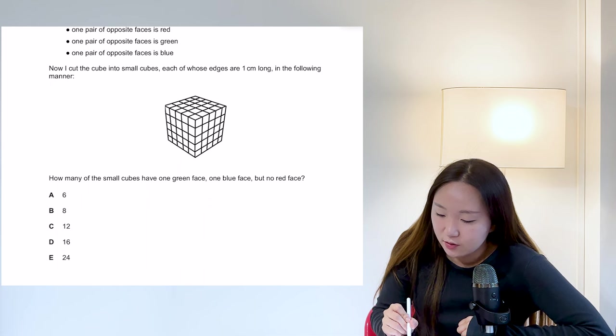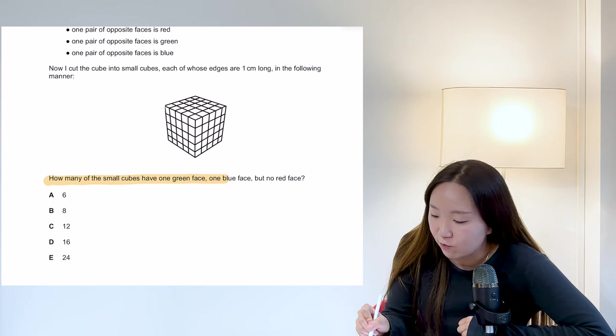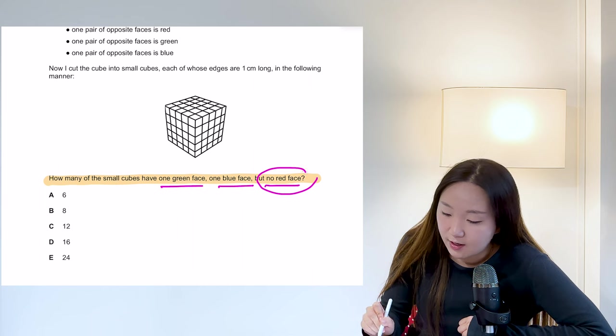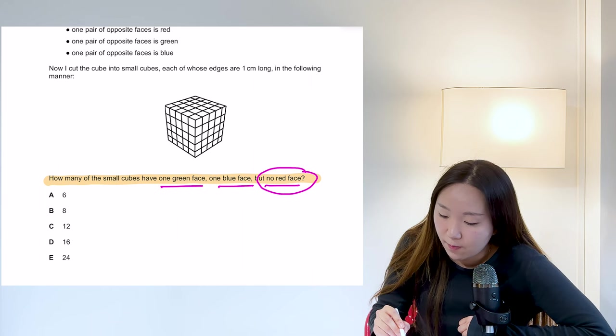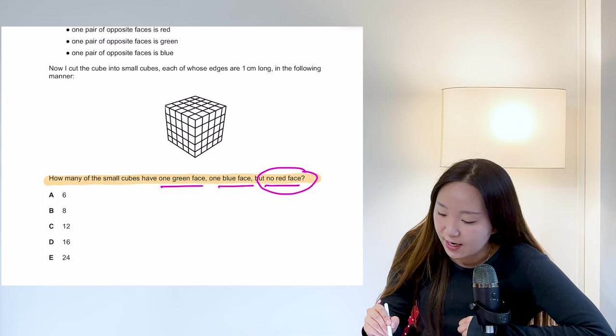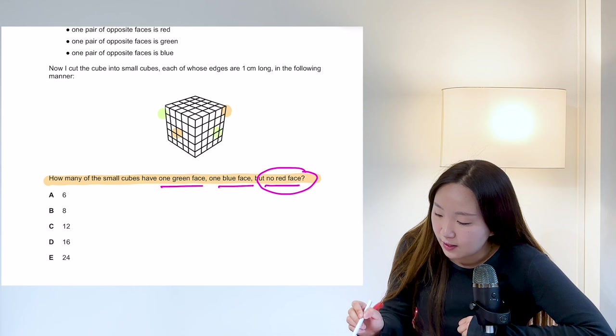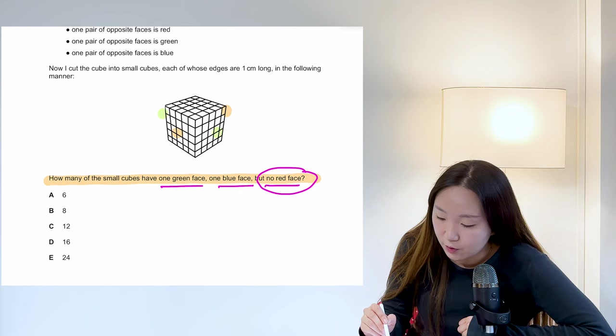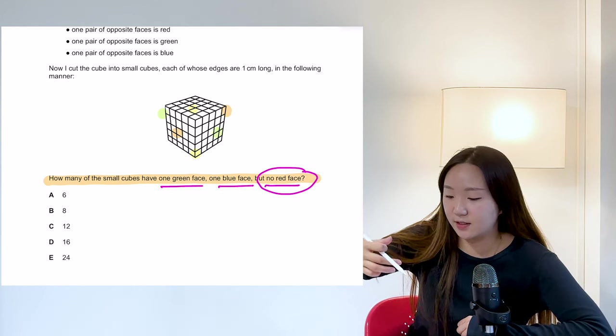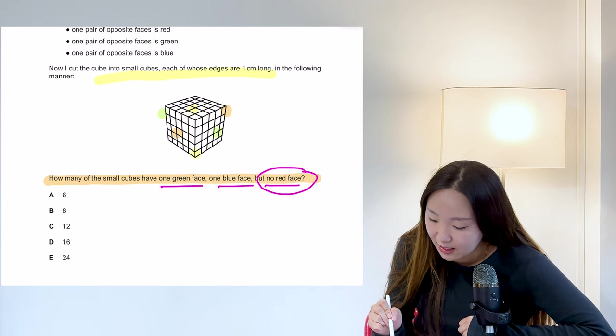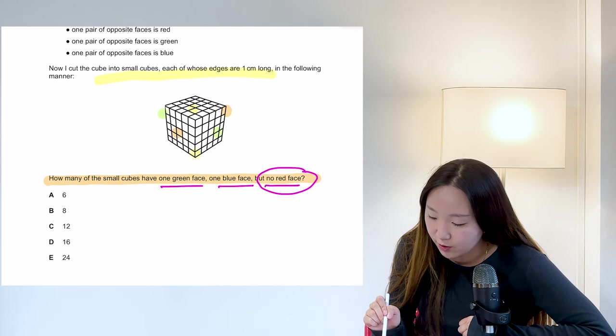Okay. So we have a nice spatial looking one here. How many of the small cubes have one green face, one blue face, no red face. So let's see what we're looking at. So we've got one pair of opposite faces is red. One pair of opposite is green and one pair of opposite is blue. Okay. So we've just got three pairs of opposite faces, basically. We're cutting into small cubes, which ones have the one green, the one blue, but no red.